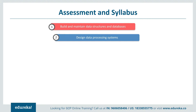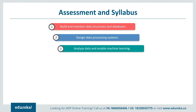Section 2 is designing data processing systems. Responsibilities in this section include batch and streaming deployment, data transformation, acquiring and importing data, testing and quality control, connecting to new data sources, provisioning resources, and monitoring and adjusting pipelines.